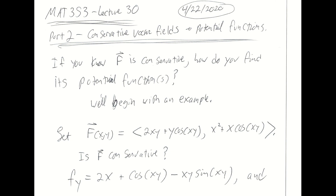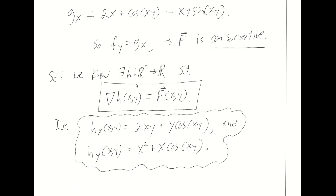We're going to start with a vector field F hat and first ask: is it conservative? We have a relatively simple method to determine whether or not a vector field is conservative. I'm going to take the partial of the first component function, which I'll call little f, with respect to the second variable y. I get this expression — there's a product rule involved in differentiating the cosine term. And I'll take my second component function, little g, and take its partial with respect to x. Those two terms are equal, so big F hat is a conservative vector field.